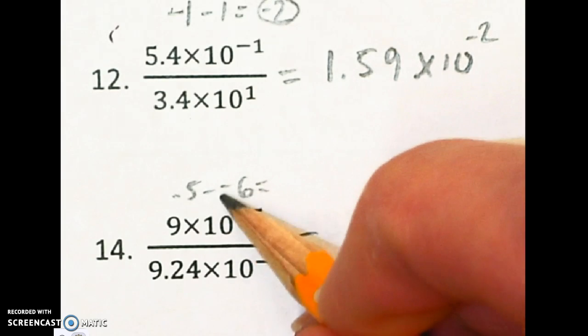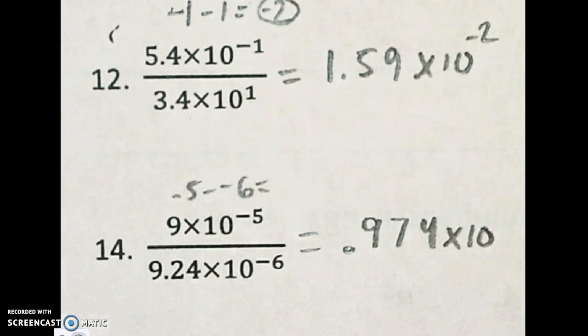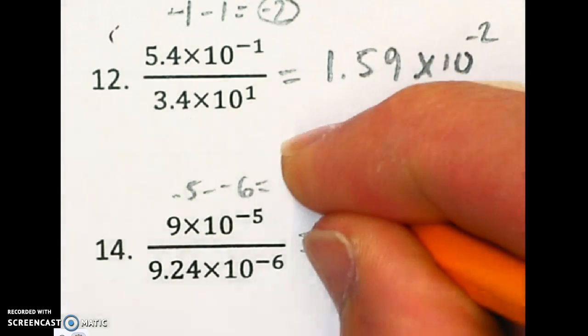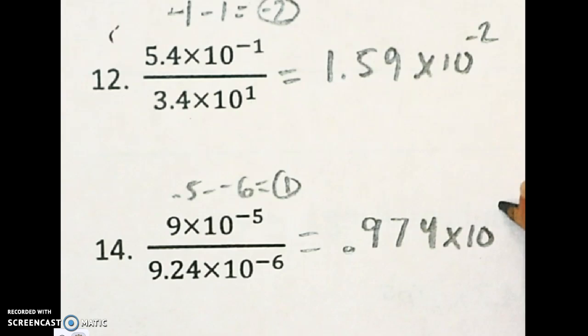That makes this into a plus because of the two negatives. This is really negative 5 plus 6. That is positive 1. So our power is positive 1.